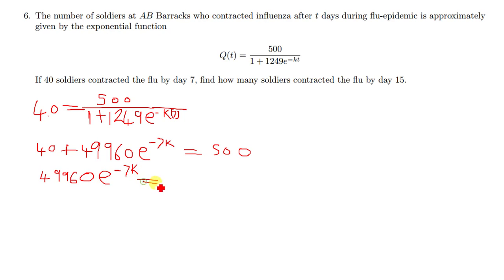On this side we'll take 40 to that side, we're going to have 460. Then we divide both sides by 49960, so that should give us something like 23 over 2498.